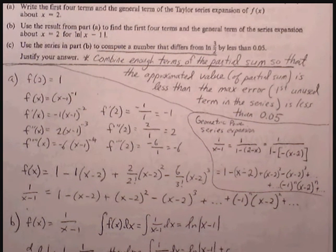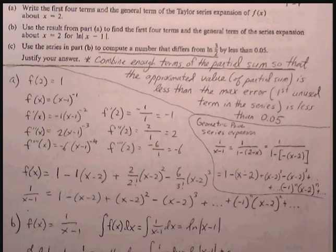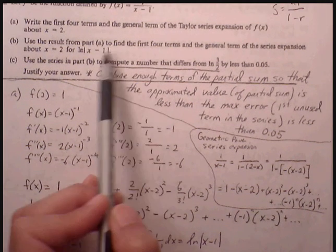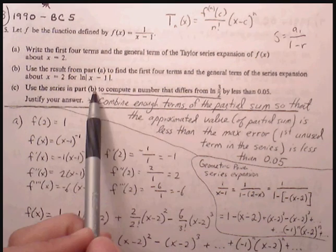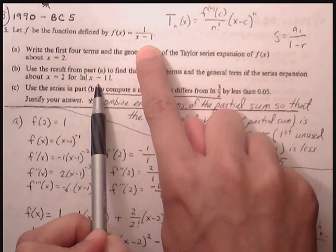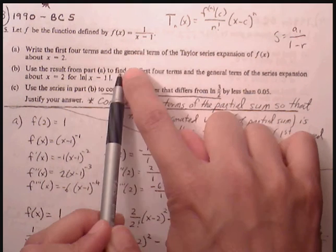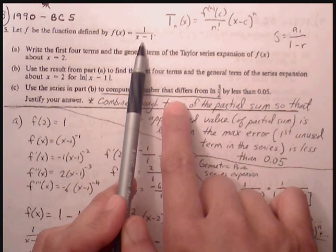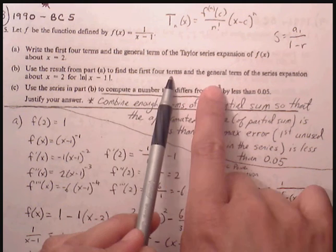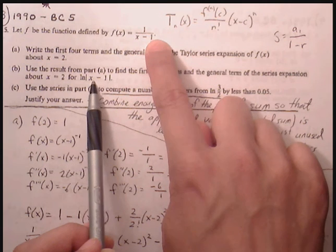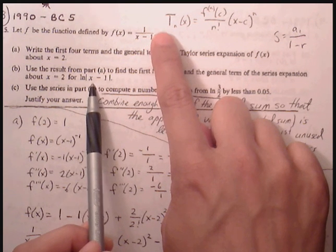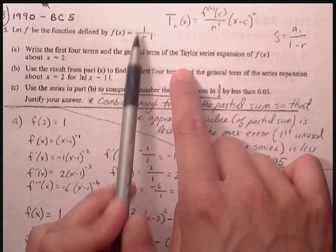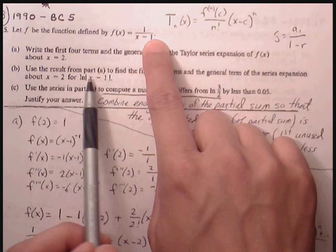Part B says: use the results from Part A to find the first four terms and the general term of the series expansion about x = 2 for natural log of (x-1). It's asking us to write the first four terms for ln(x-1) using what's given from Part A. The relationship is that these are derivative forms of each other: the derivative of ln(x-1) is 1/(x-1), which means the integral of 1/(x-1) equals ln(x-1). So if we have the polynomial expansion for 1/(x-1), we can find the integral of those terms to arrive at ln|x-1|.